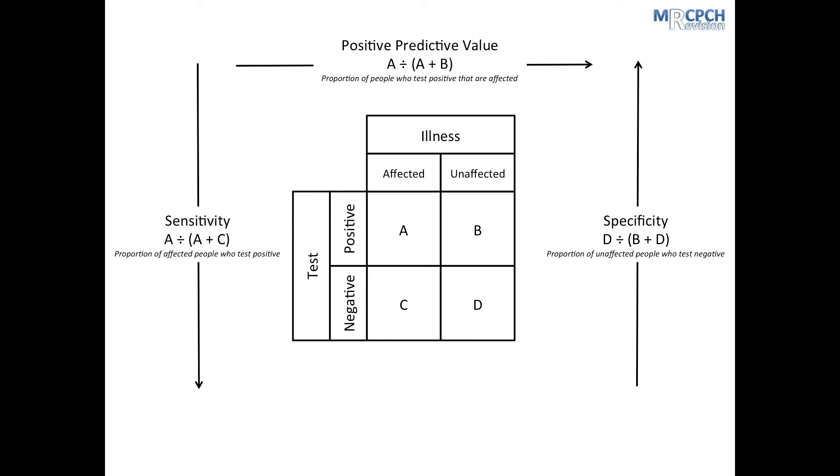Finally, there is negative predictive value, which is the proportion of people who test negative that are also unaffected by disease. Again, the people who test negative and are unaffected is represented by box D. Boxes C and D represent all the people who test negative. So, negative predictive value is D divided by C plus D, working right to left along the bottom row. To avoid confusion, take some time to make sure you're completely clear on these concepts before moving on.